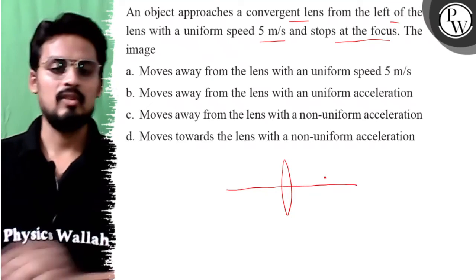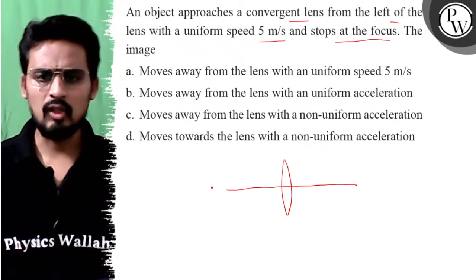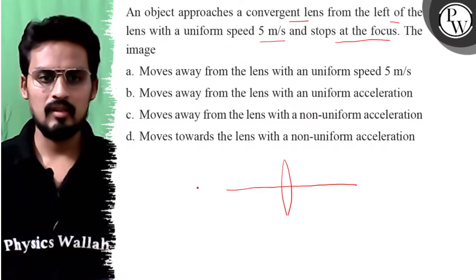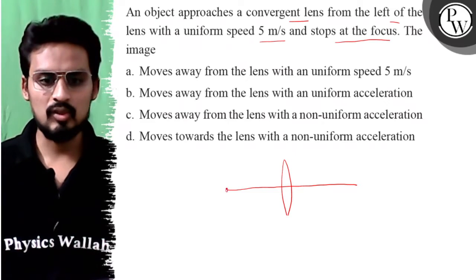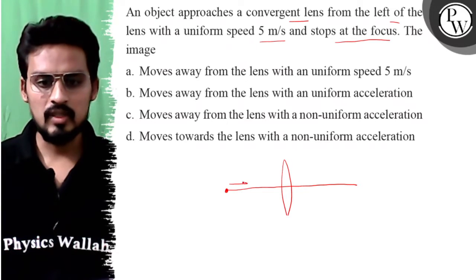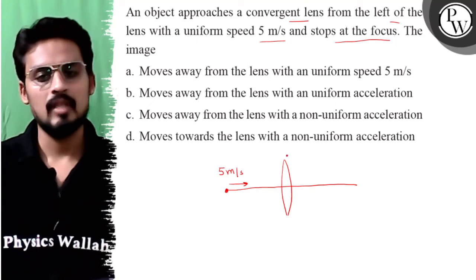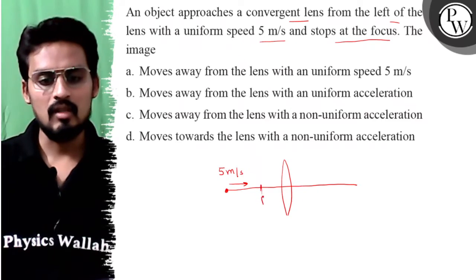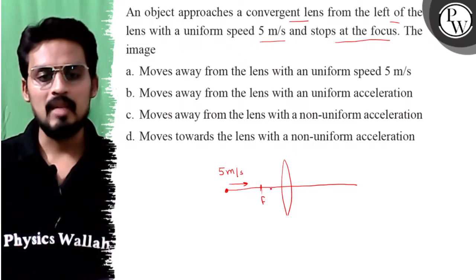So this is a convergent lens. One object which occurs from the left of the lens, it is approaching towards the lens with a speed of 5 meter per second and finally stops at the focus. We have to tell what happens to the image.